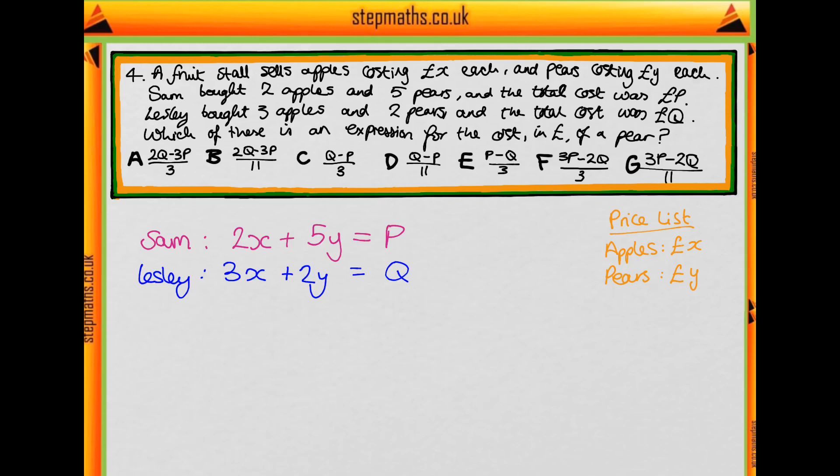So why don't you have a go at solving these equations simultaneously to find Y? It's important to notice that at no point do we need to find X. So you can save time by just eliminating X and finding Y first.